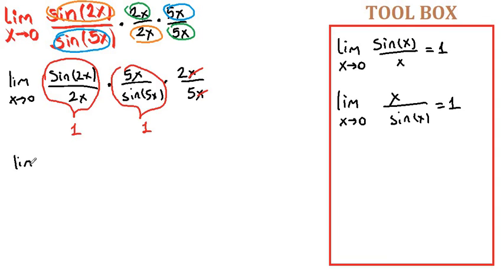So the limit as x approaches zero of 2 over 5 is 2 over 5. The limit of a constant is the constant.